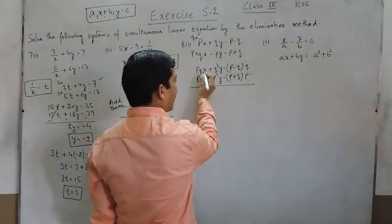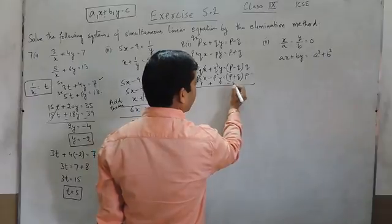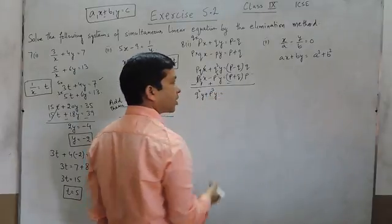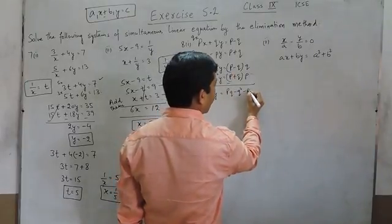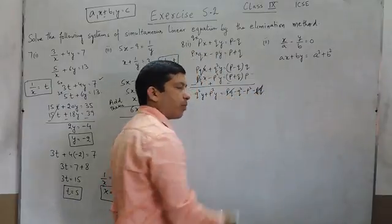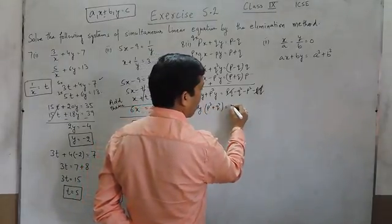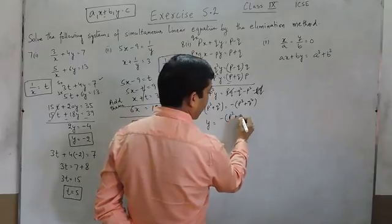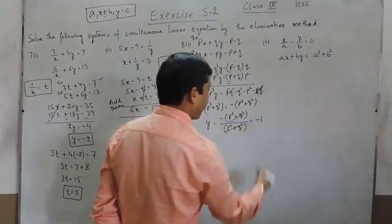When I solve this, the coefficient of x is pq in the first equation and pq in the second equation, so they cancel out. Now if I am subtracting the two equations, it becomes q squared y plus p squared y is equal to pq minus q squared. So this multiplied out gives minus p squared minus q squared y is equal to p squared. This p squared can be cancelled out. So here it becomes y in the bracket p squared plus q squared is equal to minus in the bracket p squared plus q squared. So the value of y becomes minus of (p squared plus q squared) upon (p squared plus q squared), which cancels out and comes out as minus 1.